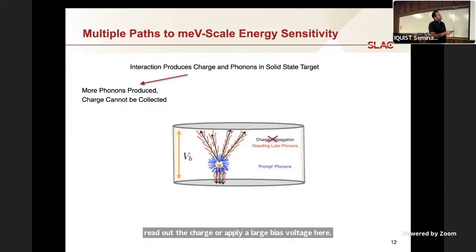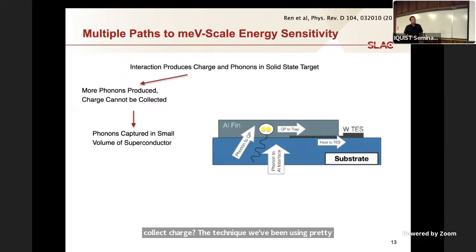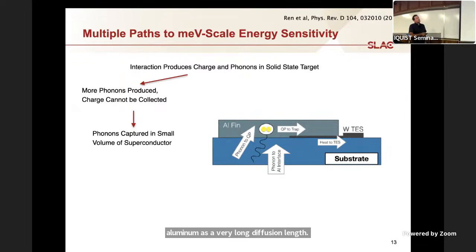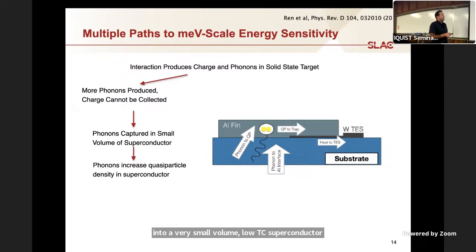A lot of the techniques we use indirect gap semiconductors where the charge is long lived. You can drift the charge, collect the charge, and either read out the charge or apply a large bias voltage to produce more phonons. Let's talk about the first path. What if I can produce a lot of phonons, but I can't collect charge? The technique we've been using pretty successfully for the last 10 years is this phonon focusing technique. I have phonons bouncing around a large substrate. I collect them in a bulk superconductor. In this case, aluminum has a very long diffusion length that breaks Cooper pairs. They become quasi particles, they diffuse to a lower gap superconductor where they're trapped.